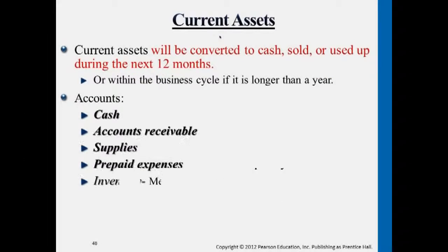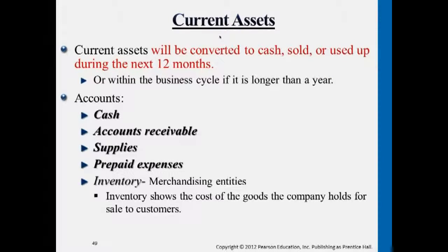Current asset — the definition is that all types of resources that will easily be converted to cash within an accounting cycle. An accounting cycle is typically about 12 months, generally speaking. So unless a specific business operation is very special compared to others, usually it's a year period of time.